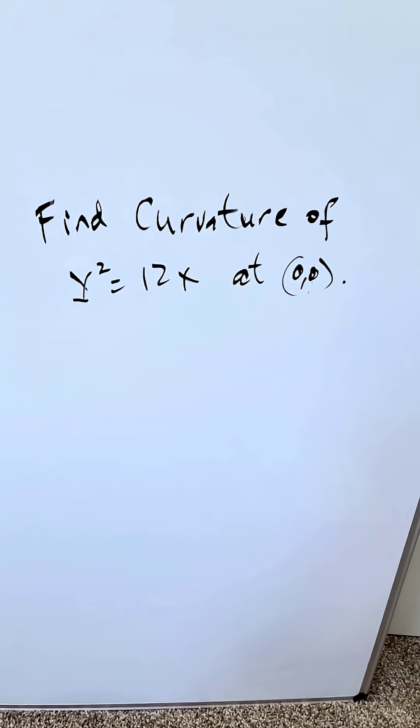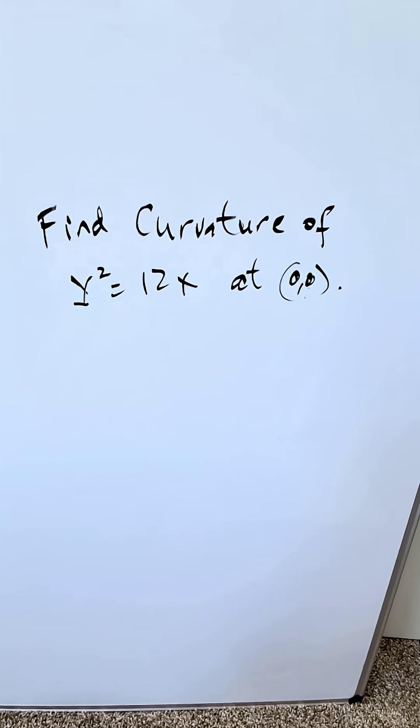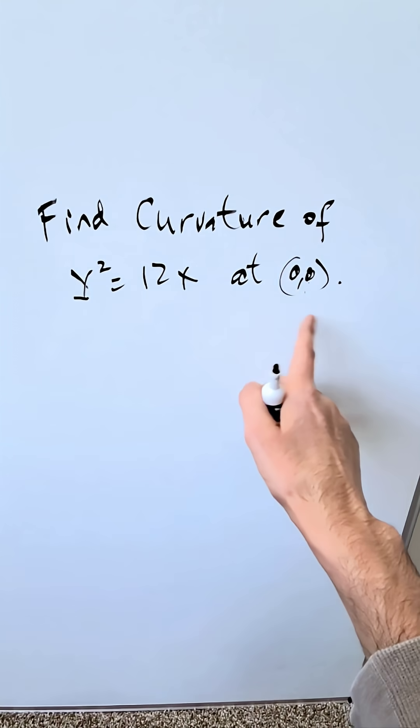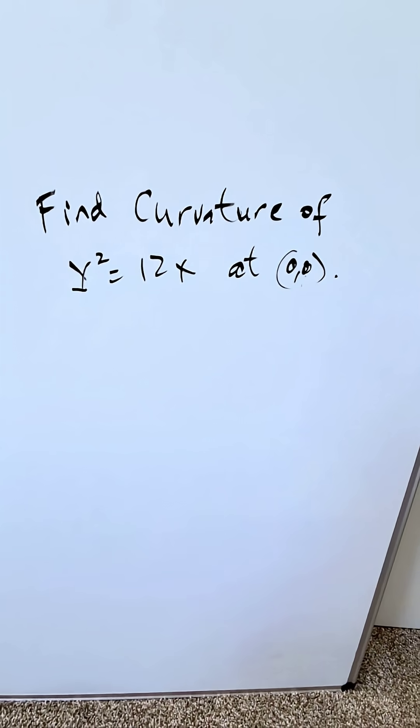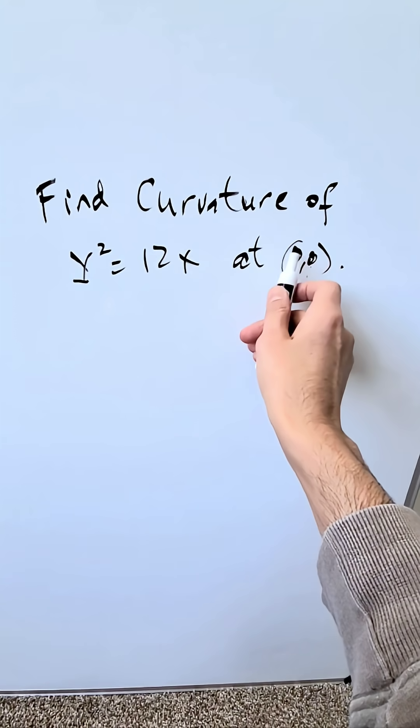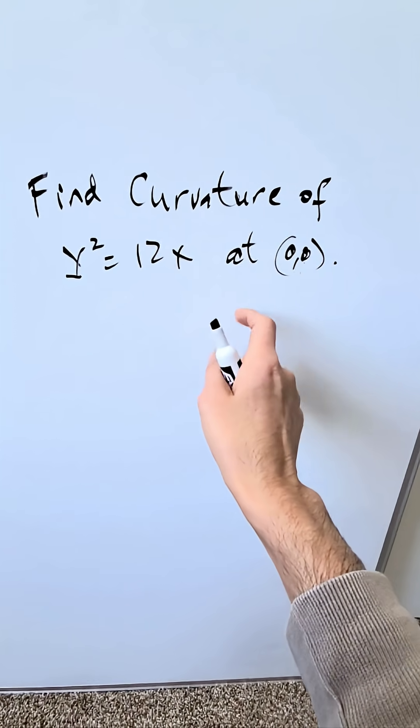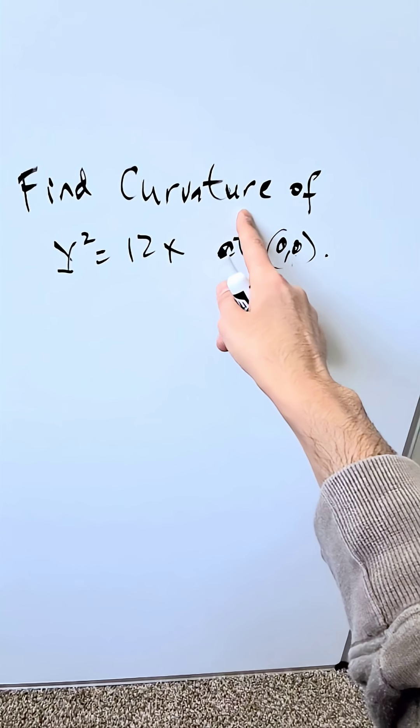Curvature is the rate of change of your direction of your curve at a particular point to the rate at which the arc length changes at that particular point. Again, the change in your direction to the change of your arc length at a particular point on a curve—that is curvature.